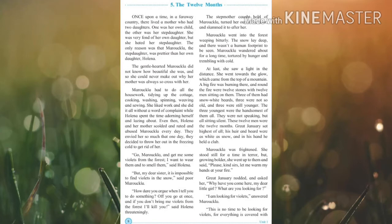One day Holina said, 'Go Marukula and get me some violets from the forest — I want to wear them and smell them.' Violets means small purple flowers. Marukula replied, 'But my dear sister, it is impossible to find violets in the snow.' By hearing this Holina got angry and said threateningly, 'How dare you argue when I tell you to do something! Off you go at once, and if you don't bring me violets from the forest I will kill you!'